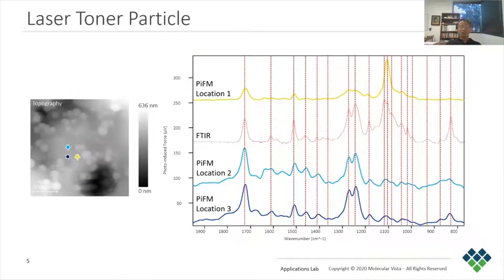In samples with nanoscale inhomogeneity, we should not expect a good match between the bulk FTIR spectrum and the local nanoscale PIFM spectrum. In this example, a laser toner particle consisting of multiple components is ground to acquire an ATR FTIR spectrum shown in red. A whole toner particle, about 7 microns in diameter, was glued down onto a substrate, and three spectra were taken at different locations.